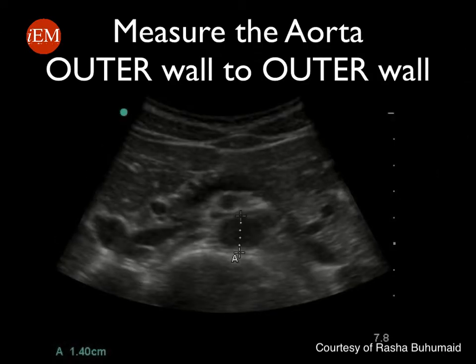To evaluate for abdominal aortic aneurysm, it is important to measure the abdominal aorta from outer wall to outer wall at the level of the proximal, middle, and distal abdominal aorta.